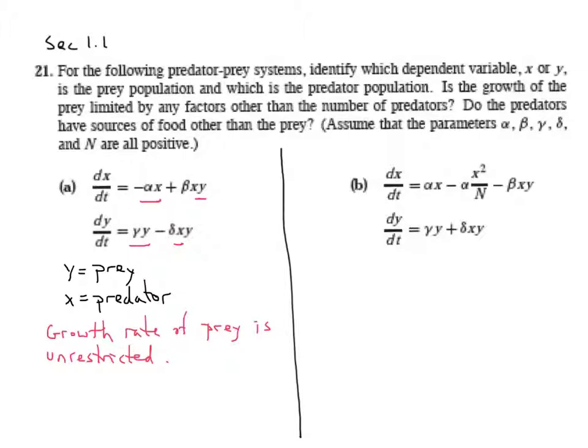Second question, do the predators have a source of food other than the prey? Well, as we see here, if y is 0, the predators die, that's all there's to it. It needs this term to succeed. I'm going to change colors back to black. And so, predators have no other source of food.